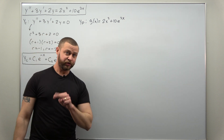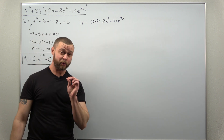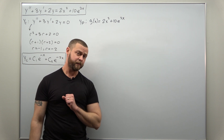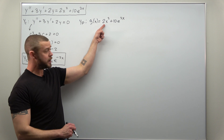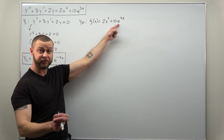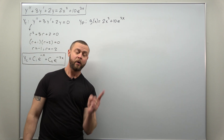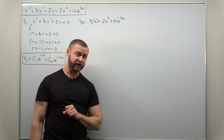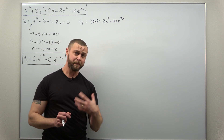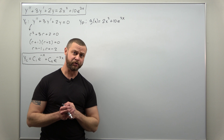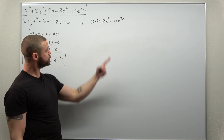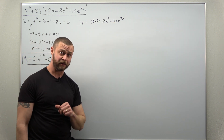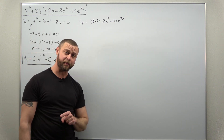We have a sum of two terms. If either of those terms were there by themselves, we would know how to choose our particular solution. Here we have a degree two polynomial, and here we have an exponential — we're adding them together. We're going to add together our two ideas for the individual particular solutions into a single big choice for the particular solution, trying a general degree two polynomial plus a general exponential function.